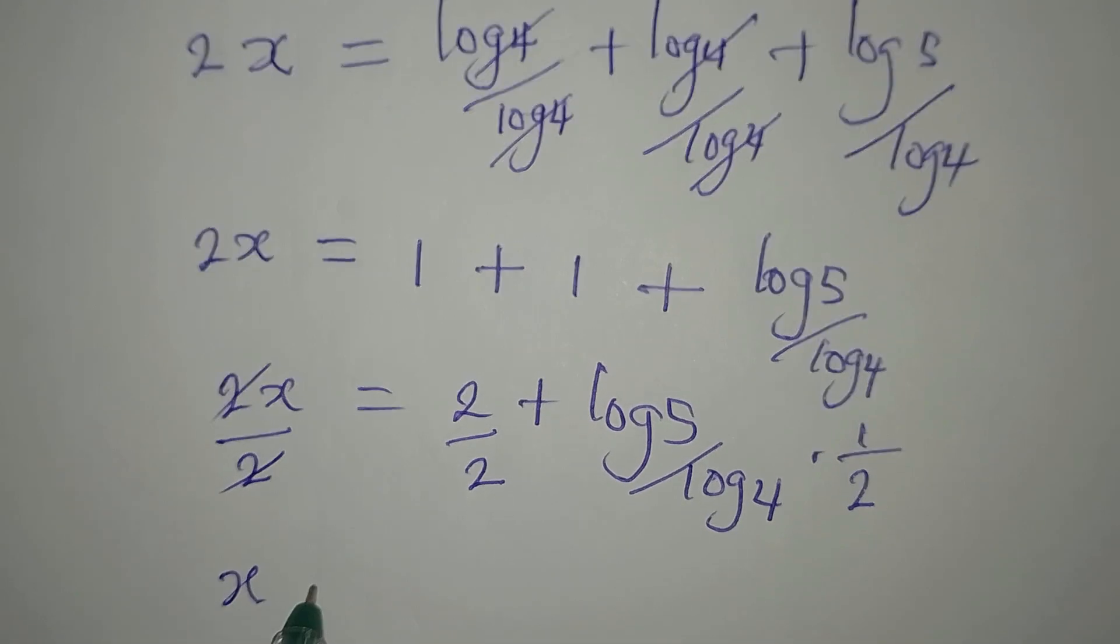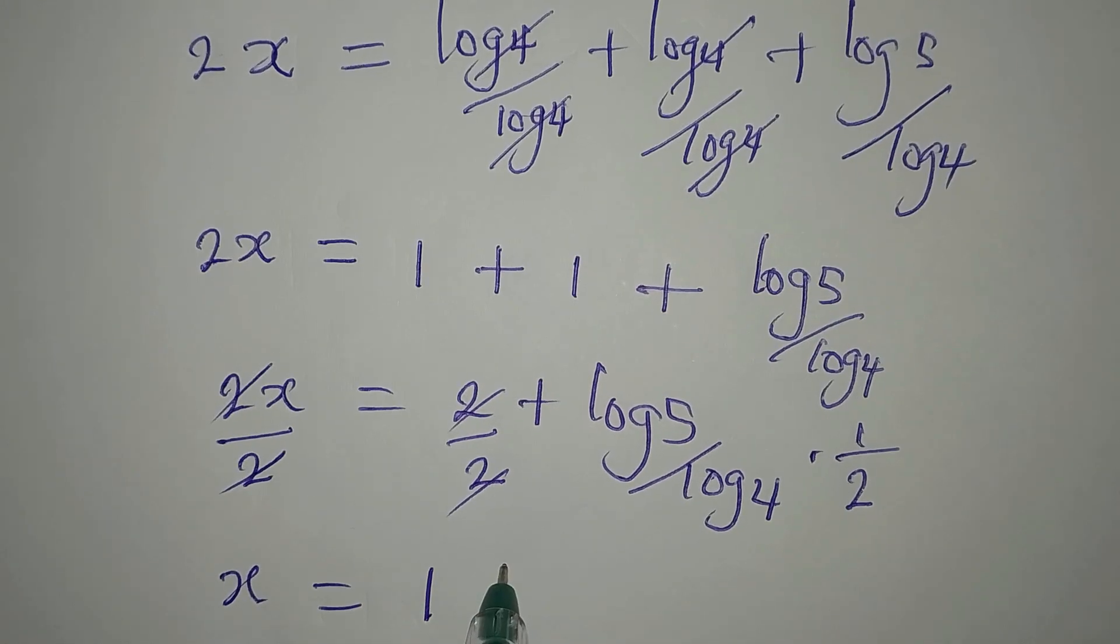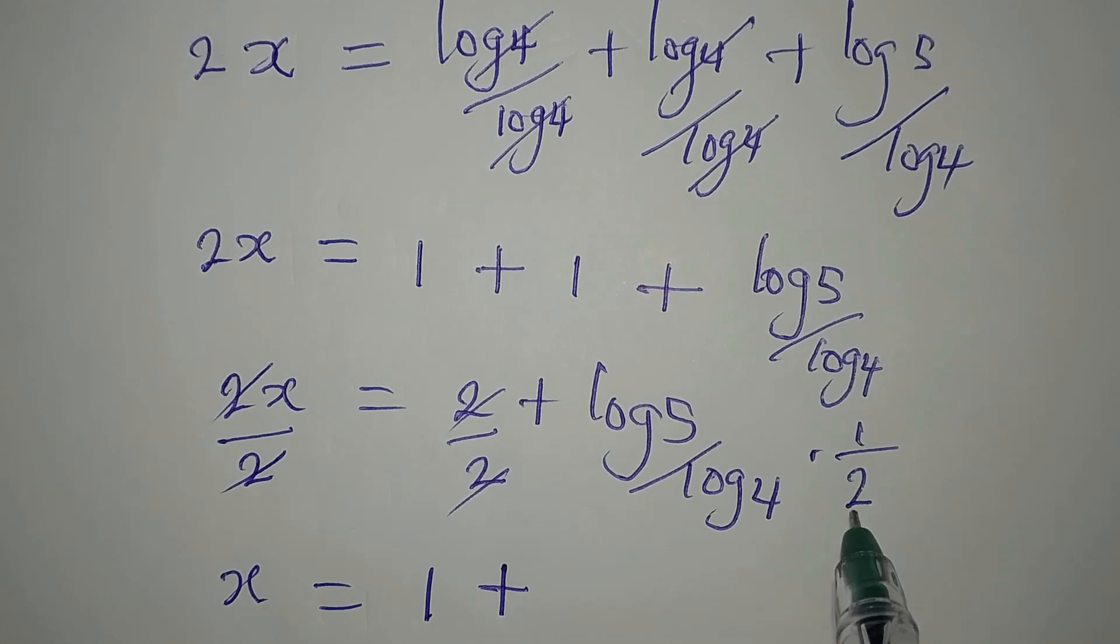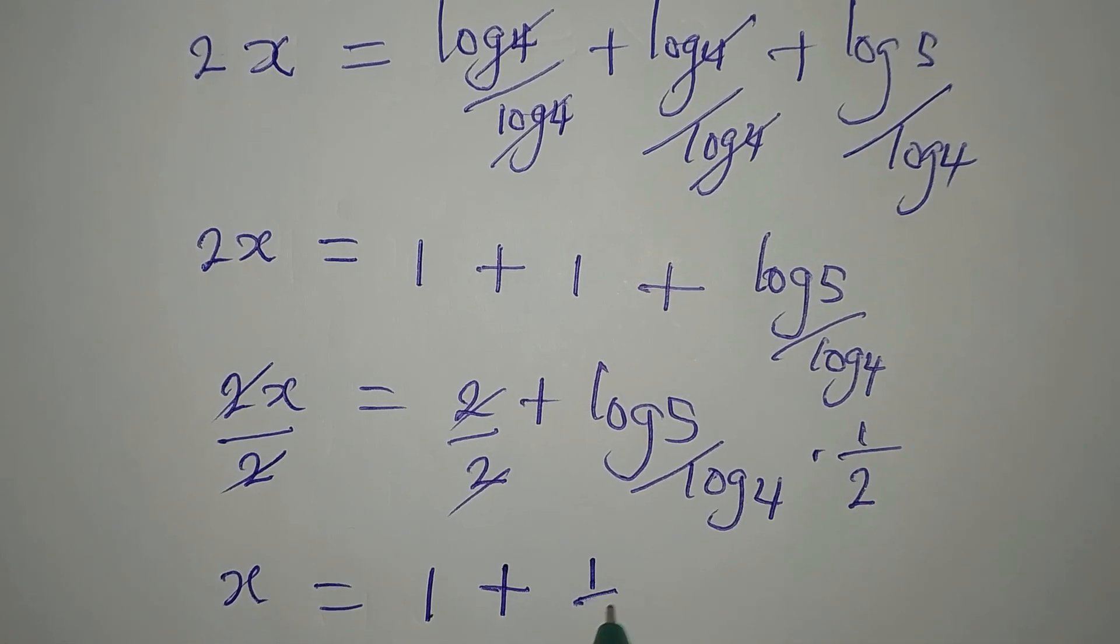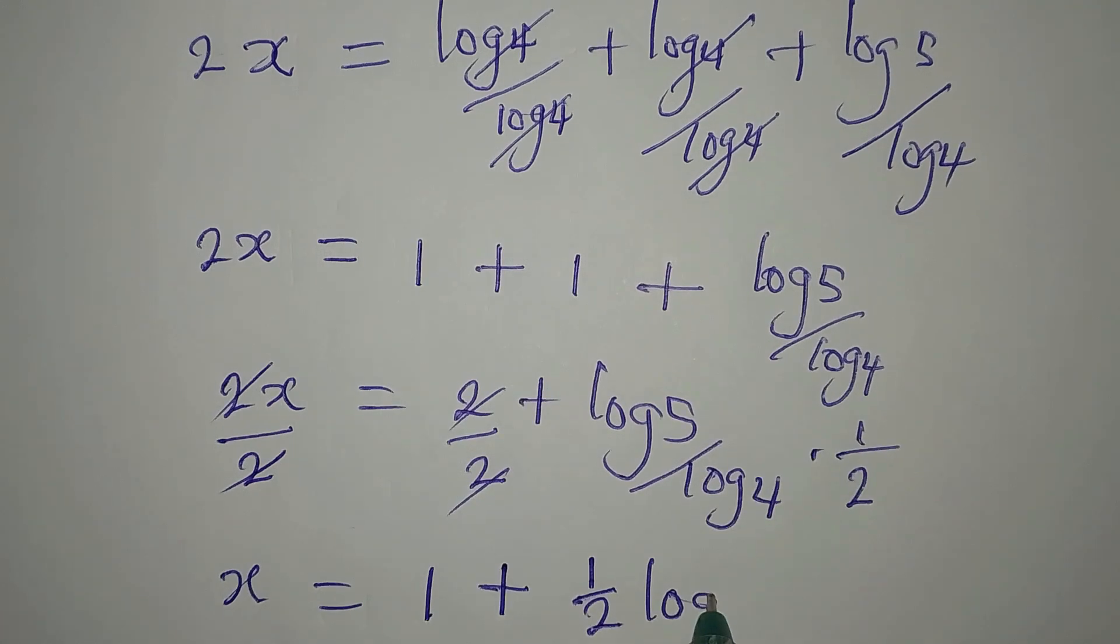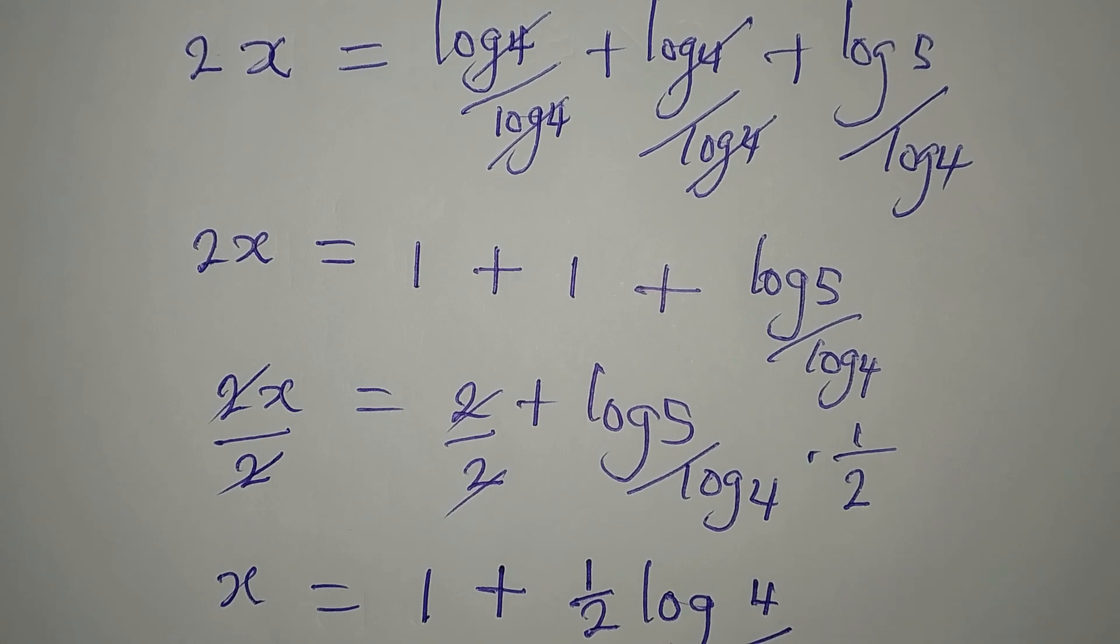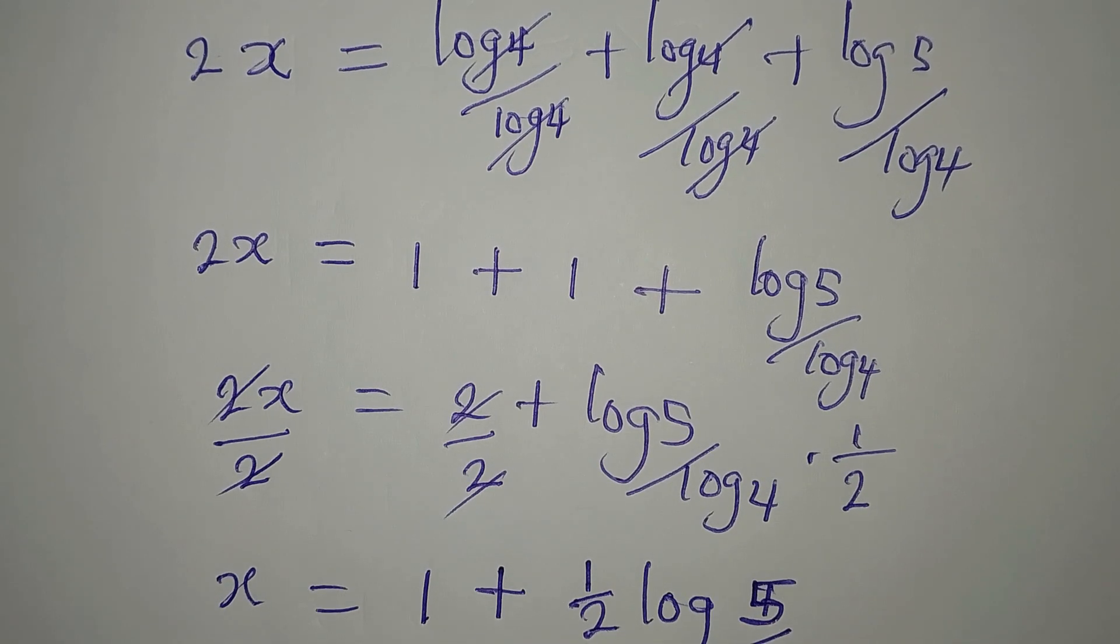2 can go, so x will be equal to 1, then plus 1 over 2 times log 5 over log 4.